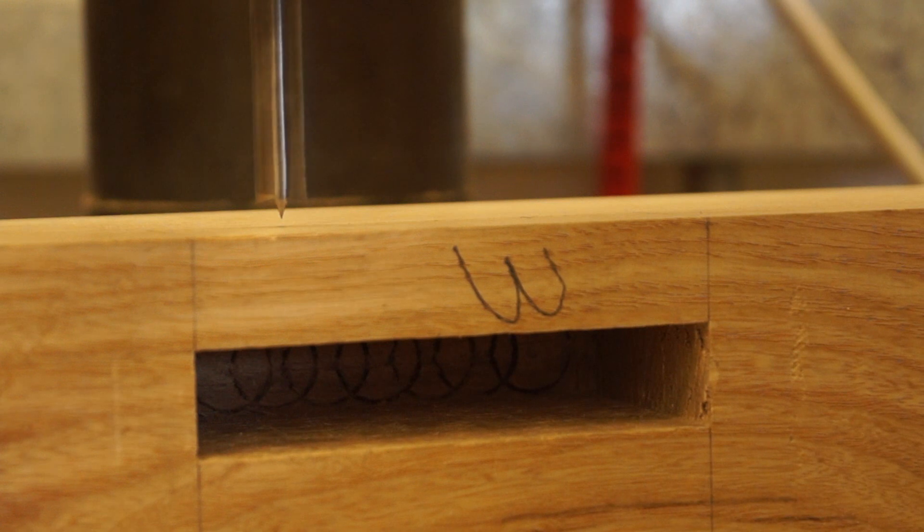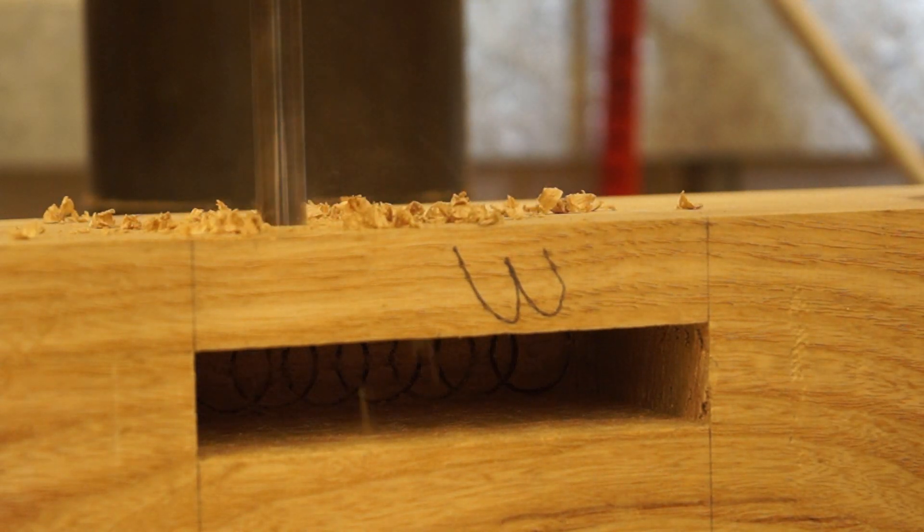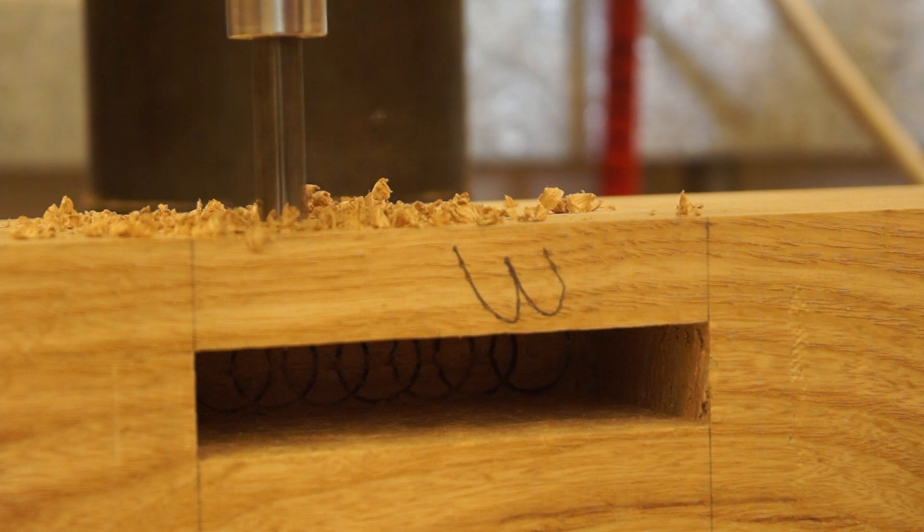I was just setting up a depth stop for the drill bit to make sure I didn't go too far. I don't think there's any particular rules for how deep you should drill. As long as it goes through both faces of the mortise and the tenon you should be absolutely fine.